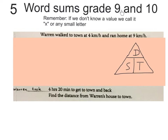We're doing word sums for grade 9 and 10, and remember if we don't know a value we call it x or any small letter of the alphabet. The question will look like this in a test or an exam: Warren walked to town at four kilometers an hour and ran home at nine kilometers an hour. You should see in this information that it's one distance — out to town and back home. Then they ask: Warren took four hours and twenty minutes to get to town and back. Find the distance from Warren's house to town. People don't like this but look at this video a few times and get the feeling of what's going on.